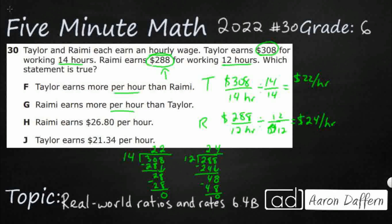Let's look at our answers here. Taylor earns more per hour than Ramey. Nope. 22 is definitely not greater than 24. That's what it's saying. So, that is incorrect. G: Ramey earns more per hour than Taylor. The exact opposite. This is saying 24 is greater than 22. Yep. That's what we've been saying. That's looking pretty good.